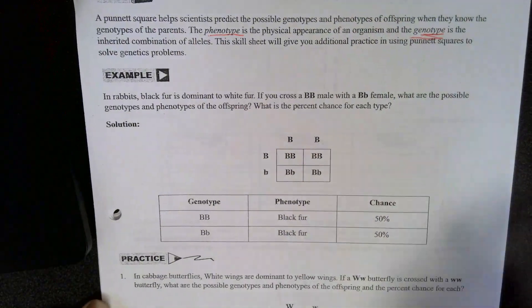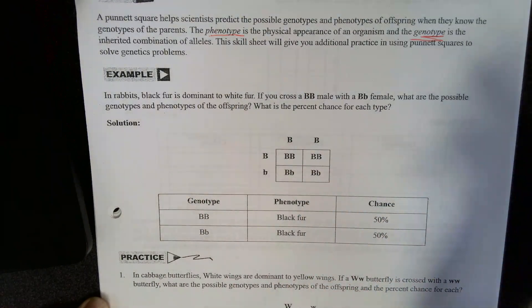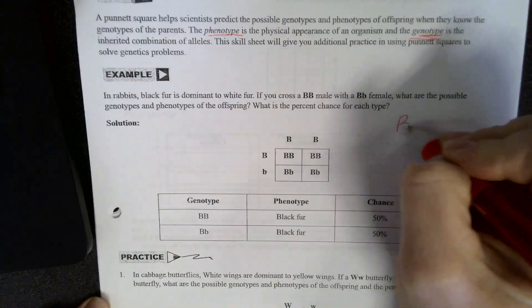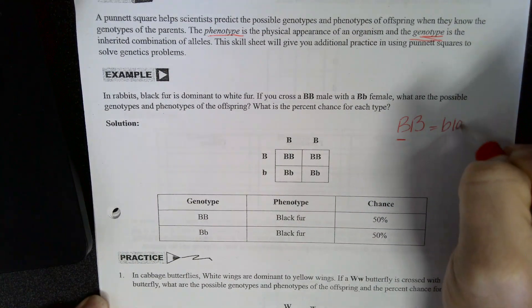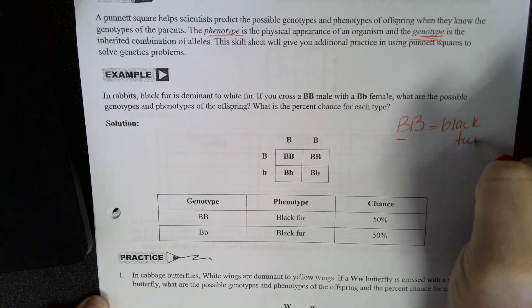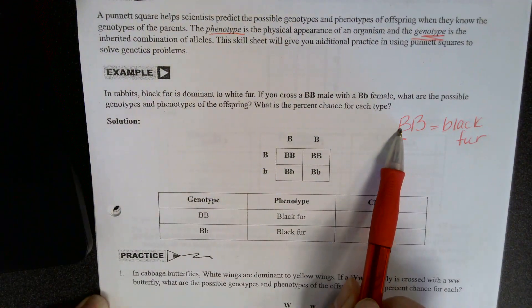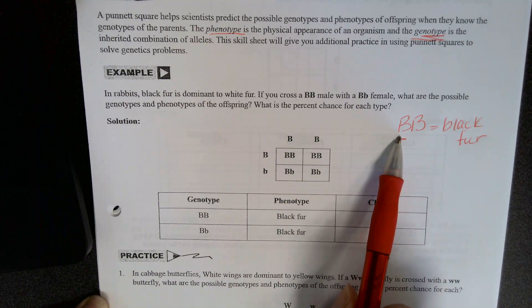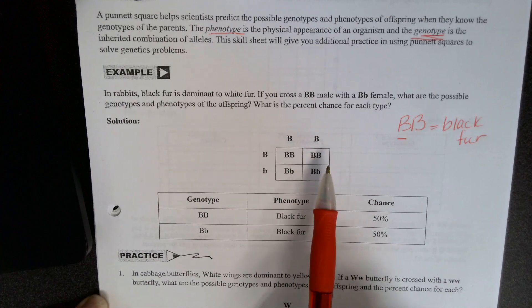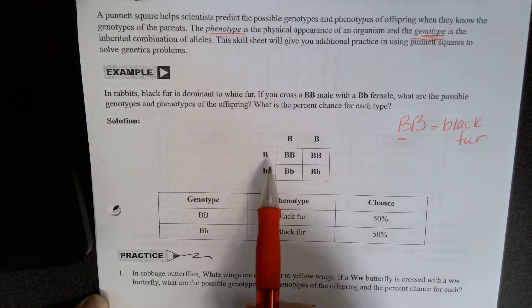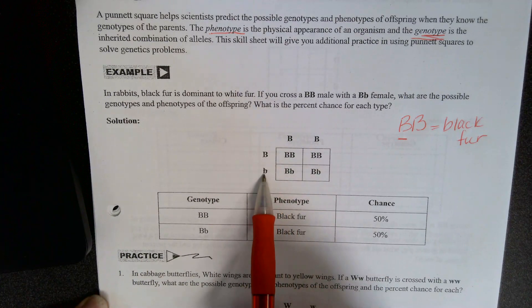Okay, so for example, if black fur is dominant to white fur, then any rabbit that has at least one big B is going to have black fur. The big B indicates the black form of the trait, which is the dominant trait, whereas the little b is the white form of the trait, which is the recessive trait. So if we have, once we know the parent alleles, the way that you set them up, it doesn't matter if you put it on the top or the left side.